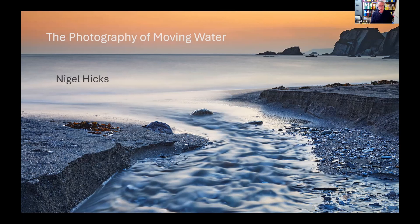There are two main ways of trying to do that. The first is actually freezing the movement of the water, and the other way is at the other extreme, blurring the movement of the water. If you're trying to freeze the movement, you're going to use a fast shutter speed. If you're going to blur the movement, you use a very slow shutter speed so the water just blurs out. My personal preference is most of the time to blur the movement of the water.